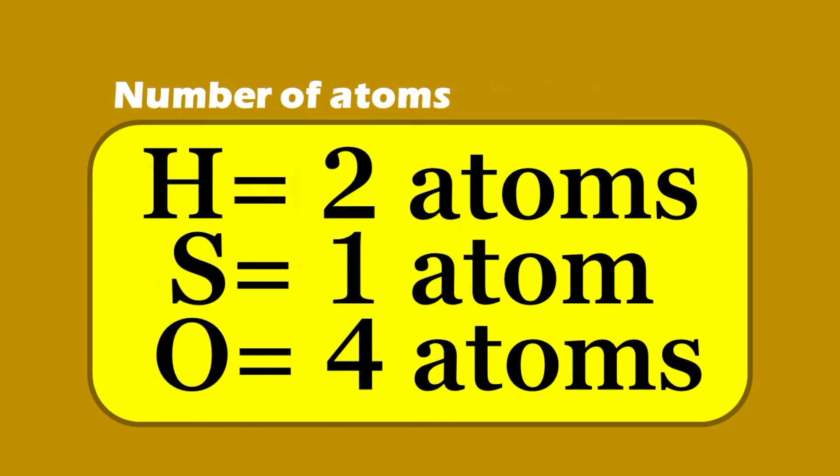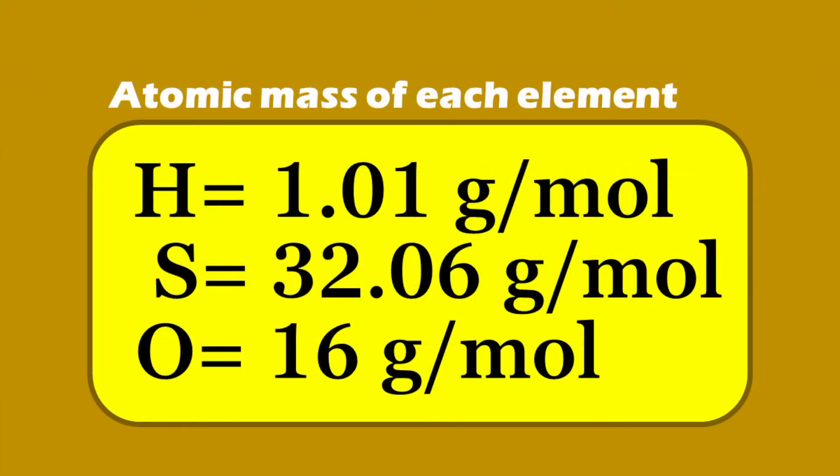To find the atomic mass of each element, we need to use the periodic table. Hydrogen has atomic mass of 1.01 grams per mole. Sulfur has atomic mass of 32.06 grams per mole. Oxygen has atomic mass of 16 grams per mole.